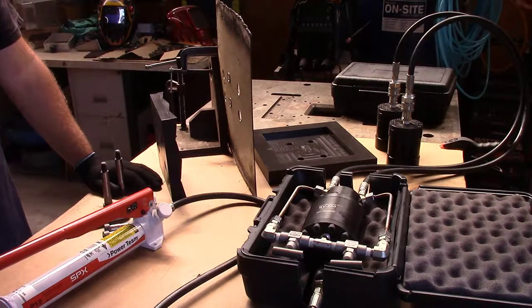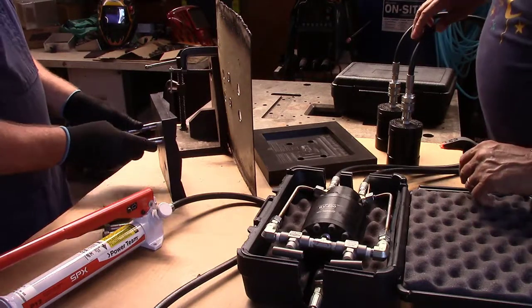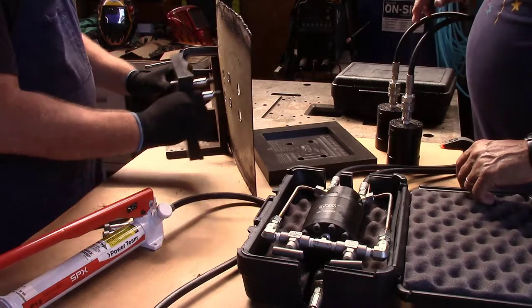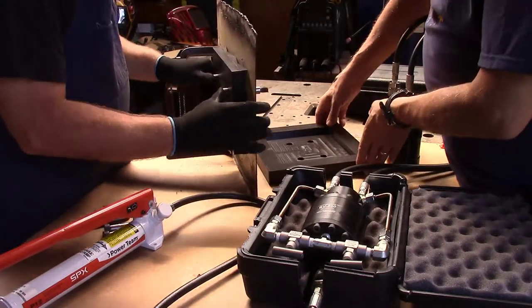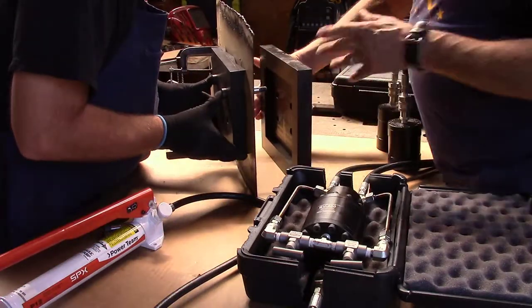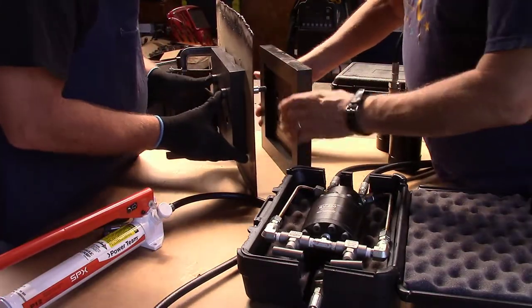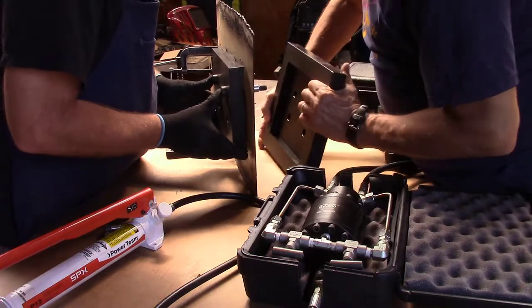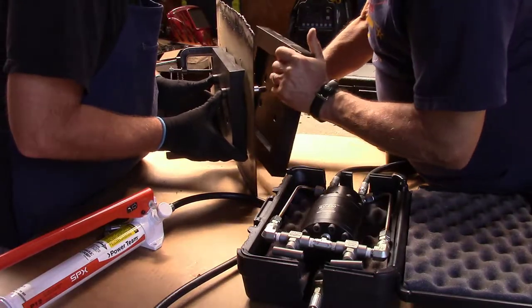We start by inserting our draw bolts into the punch portion of our die set and this is where it's a good idea to have a couple of people involved, not that you can't do it by yourself, but it just makes it a lot easier and better for your whole day in general.